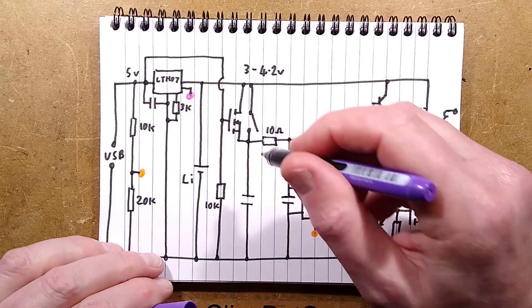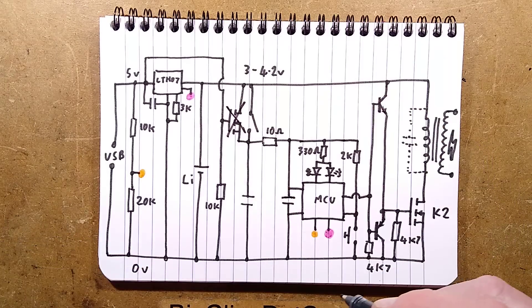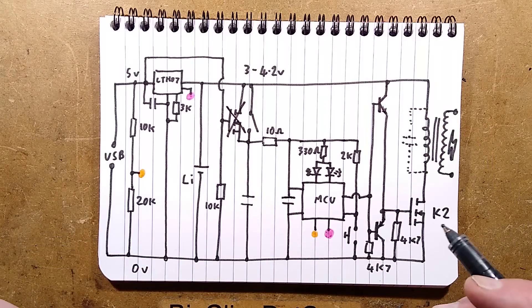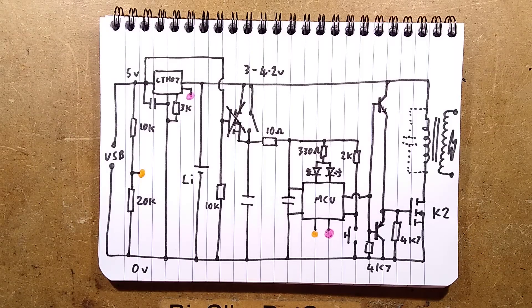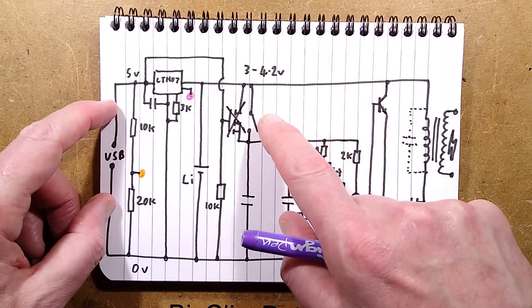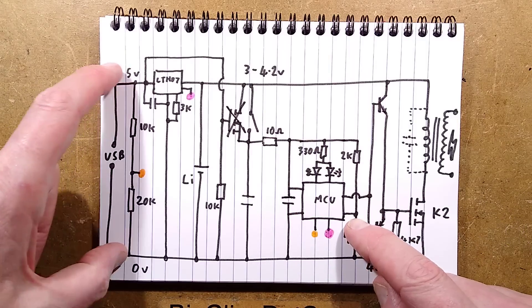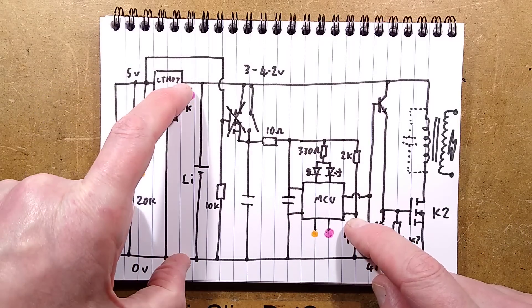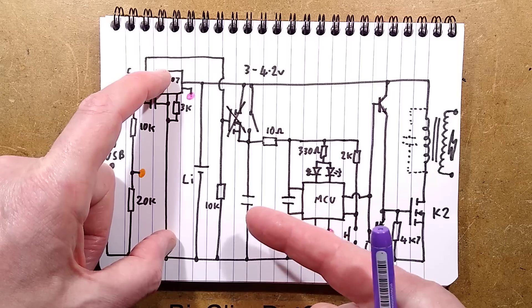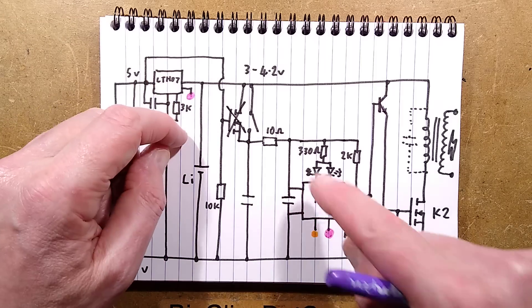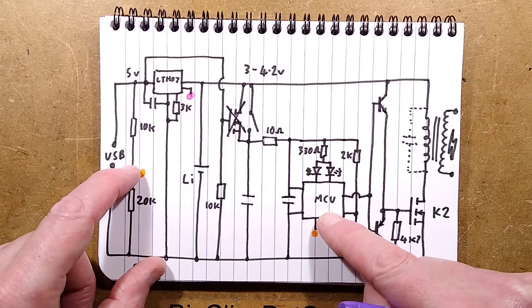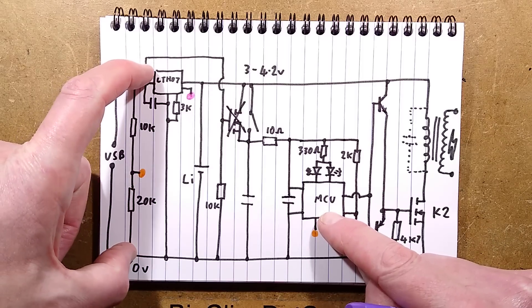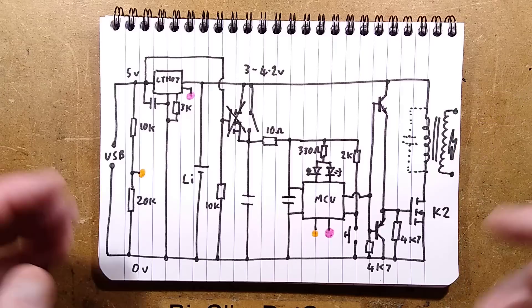What I did was remove this MOSFET violently. Now when you plug it into USB, if the switch is off, power will be applied to the LTH07 and charge in the background until it reaches 4.2 volts. But if the switch is on, the microcontroller will be active and indicate the charging state on these two LEDs.